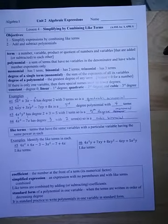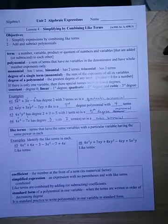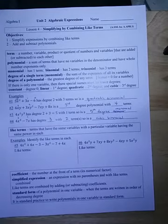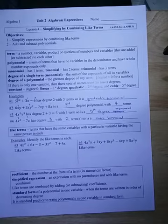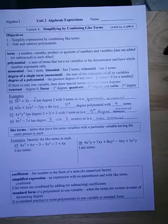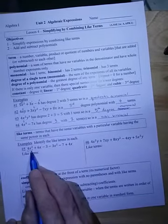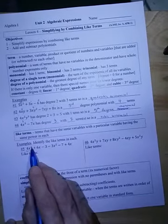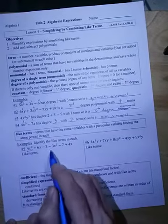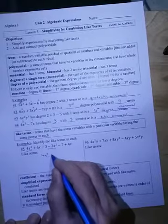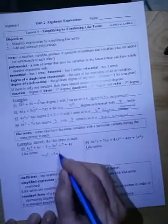Like terms are terms that have the same variables with each variable having the same powers. You can't say x and x² are like terms — the variables are the same but the powers differ. Both the variable and the power have to match. For example, 4x² and −3x² are like terms because both are x².